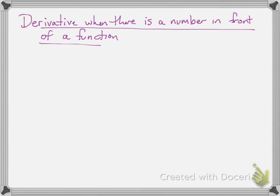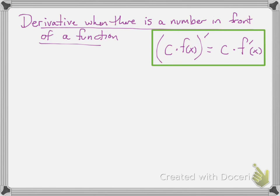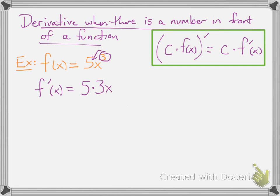Finally, we're going to learn how to take a derivative when there is a number in front of a function. All you have to do is forget about that number and multiply it by the derivative of the function. For example, with 5x cubed, you just worry about how to take the derivative of x cubed and leave the 5 alone. That 3 comes down in front and multiplies by the 5, so you get 15x squared.